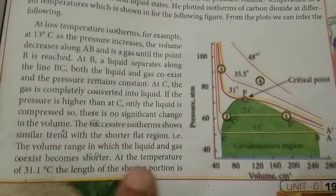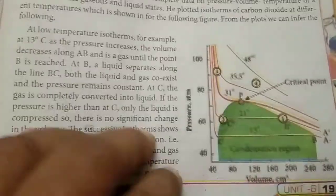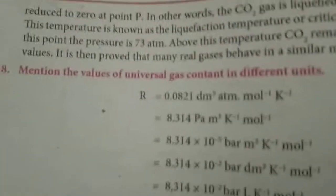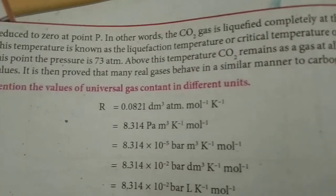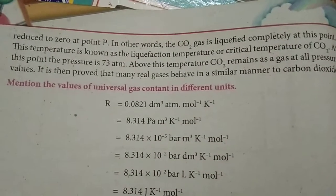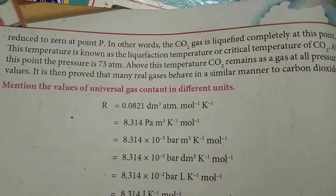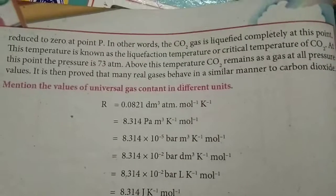At the temperature of 31.1 degrees Celsius, the length of the flat portion is reduced to zero. In other words, CO2 gas reaches its critical point at this temperature. This temperature is known as the critical temperature of CO2.